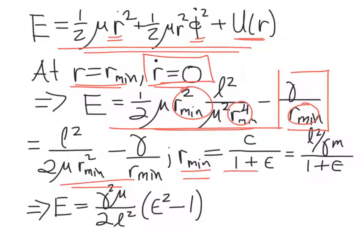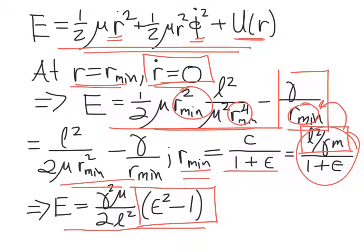Well, remember, r min is given by c, the constant, over 1 plus epsilon. And remember, we defined c to be this constant here. And so we can plug all of this in for r min. There's a little bit of algebra involved that the book walks through. But the upshot of all of this is that the total energy of the orbit, the potential plus the kinetic energy, is given by this expression here. And so you can see that the energy for an orbit is related to the eccentricity epsilon squared minus 1.